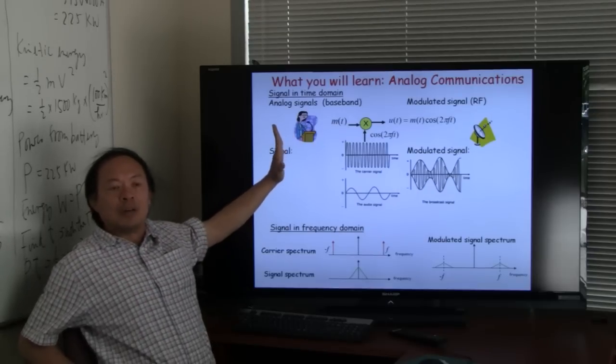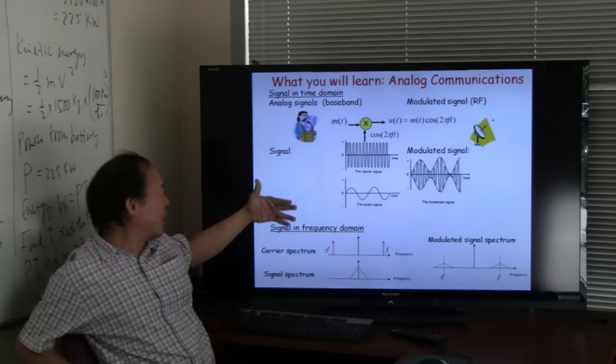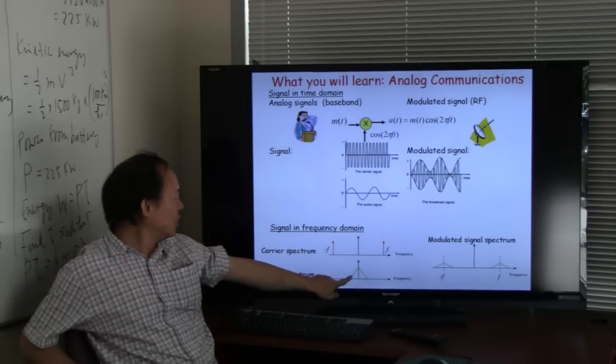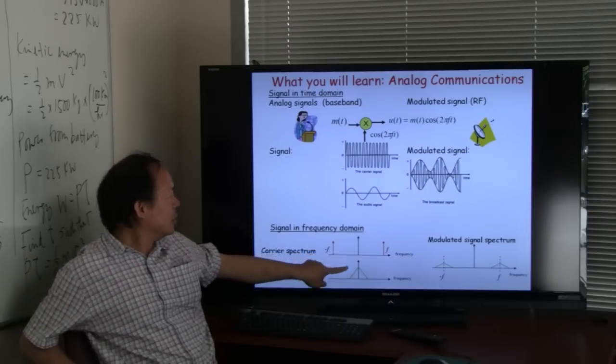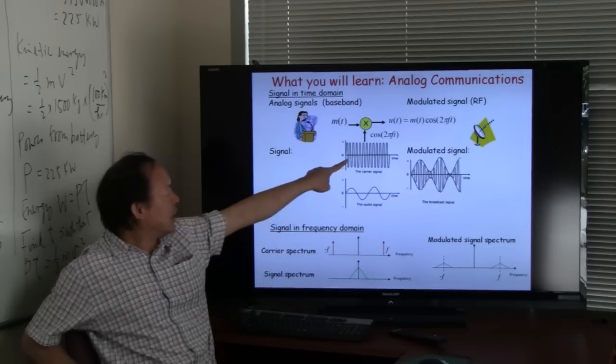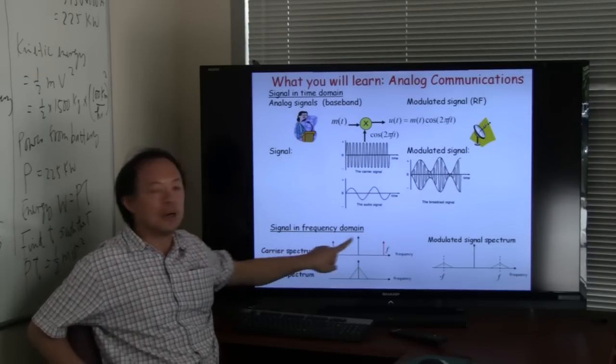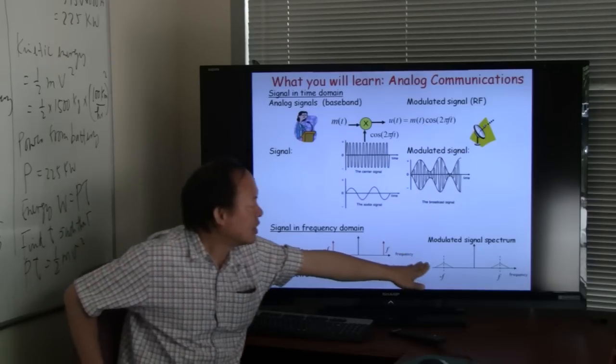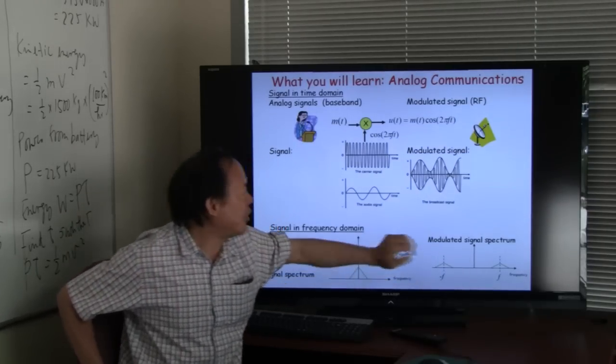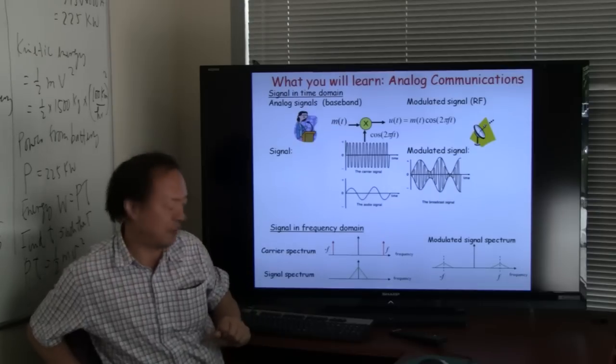We focus very much on the frequency domain analysis whereby the signal, we call the signal spectrum in baseband, would be modulating a carrier which are two impulses in the frequency domain and then you can send it as a radio frequency signal over the air wave.